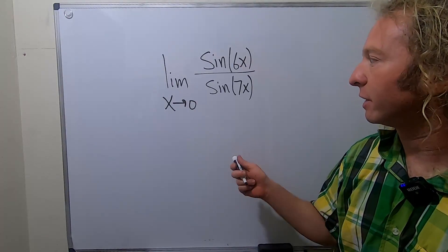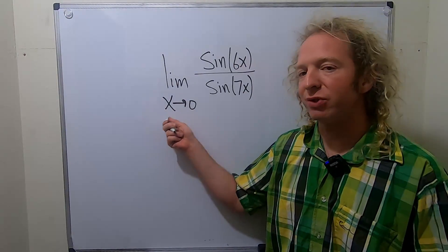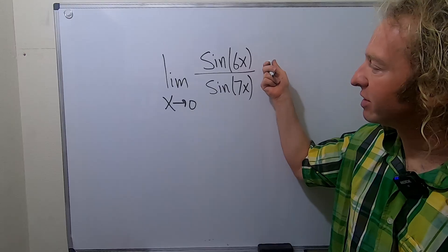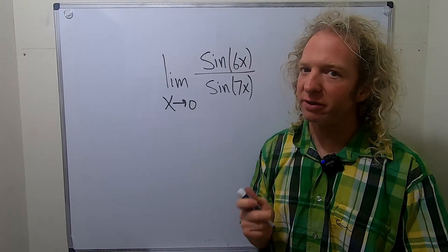Hey everyone, in this video we're going to compute this limit. It's the limit as x approaches zero of sine of 6x over sine of 7x.